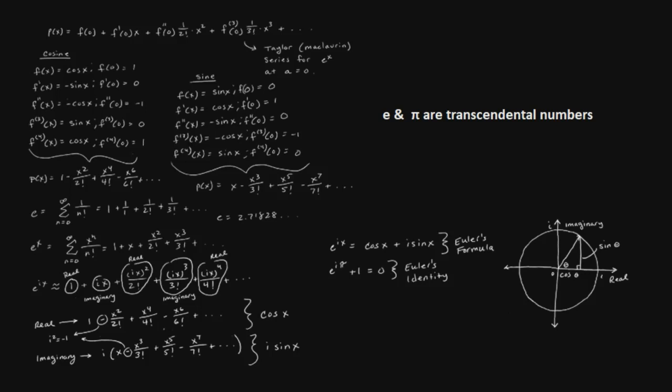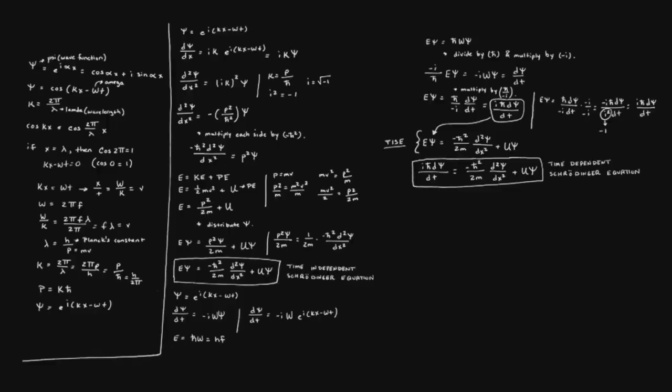If we replace the variable x with pi, we can show how e to the i times pi plus one is equal to zero.